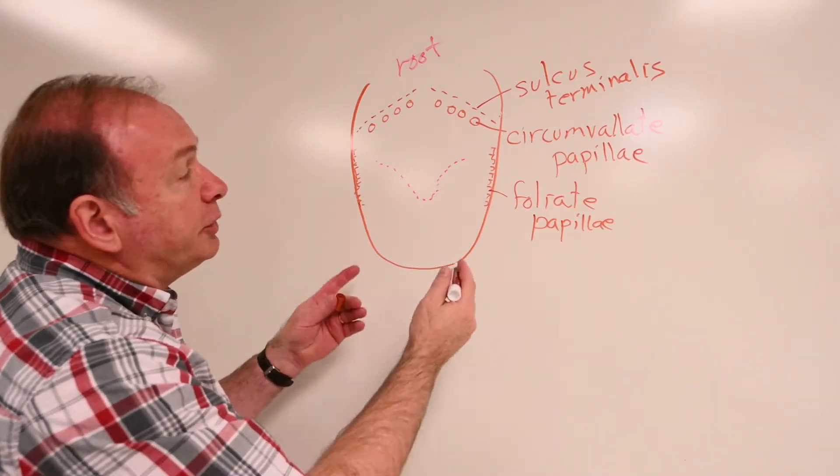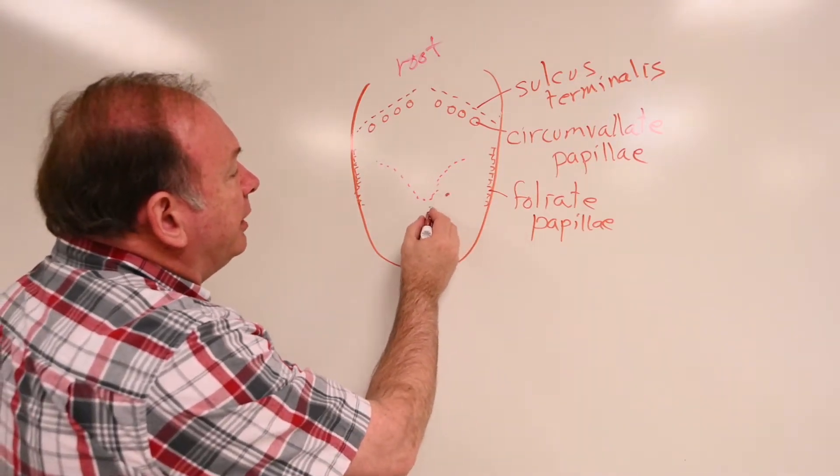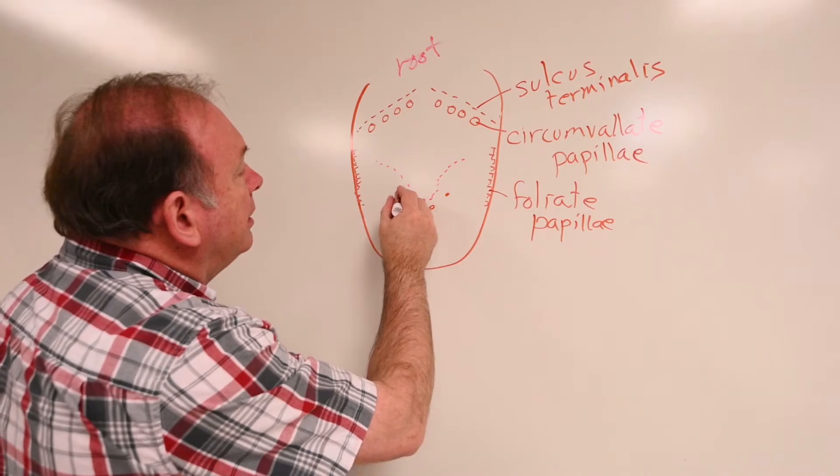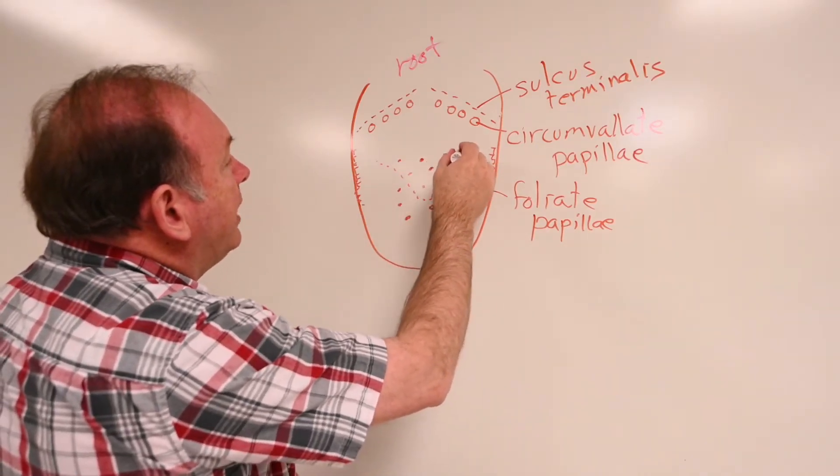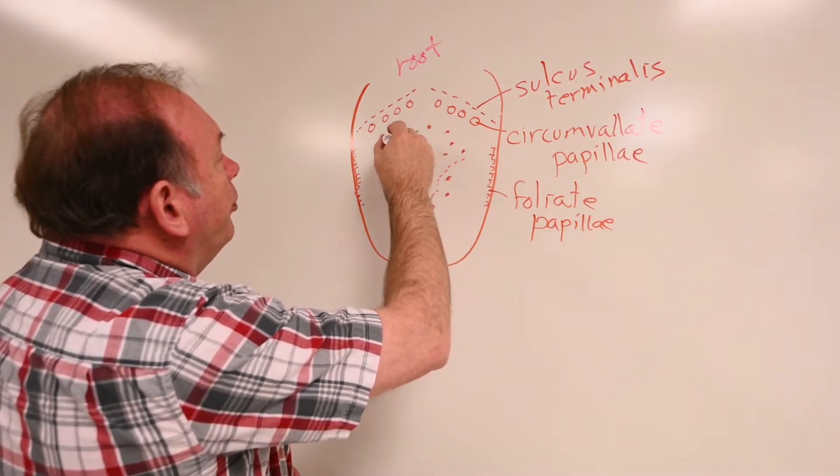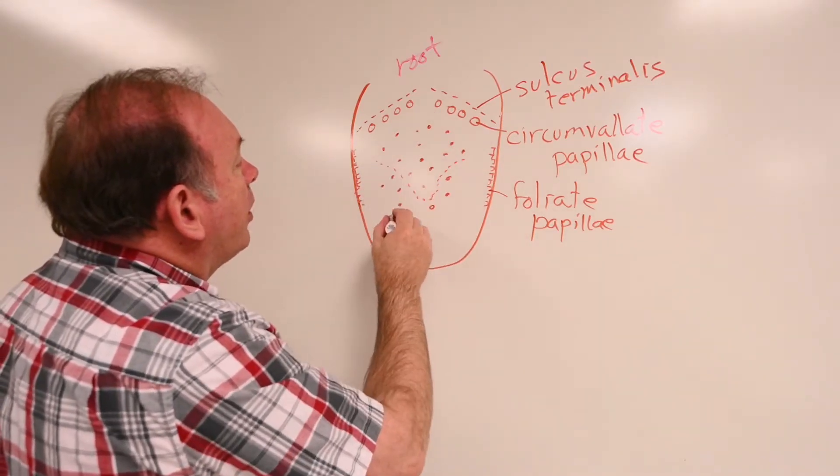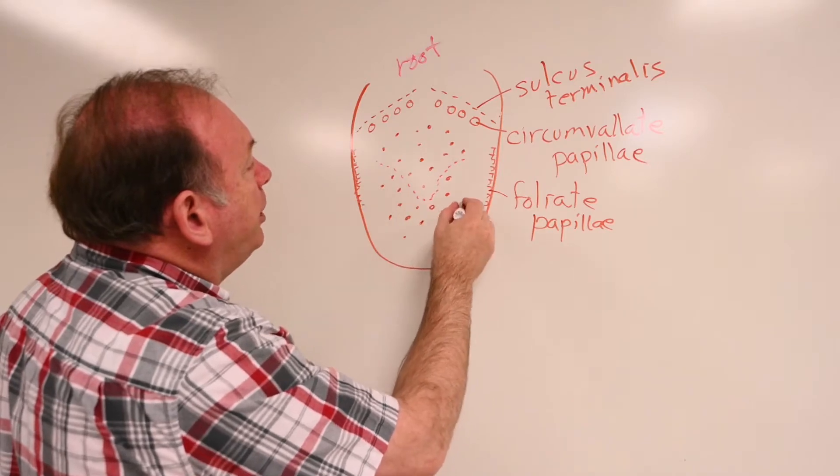Also on the tongue, scattered through here, on the surface of the tongue, throughout pretty much all of the tongue, are what are called fungiform papillae.